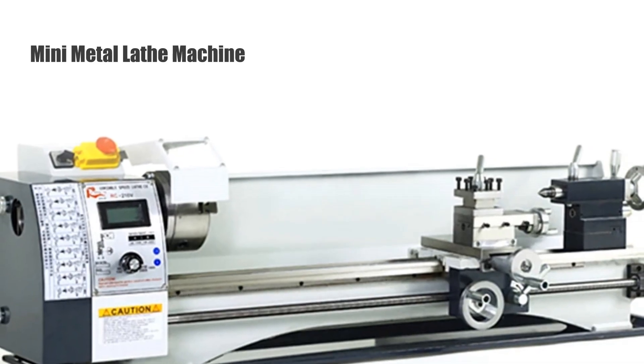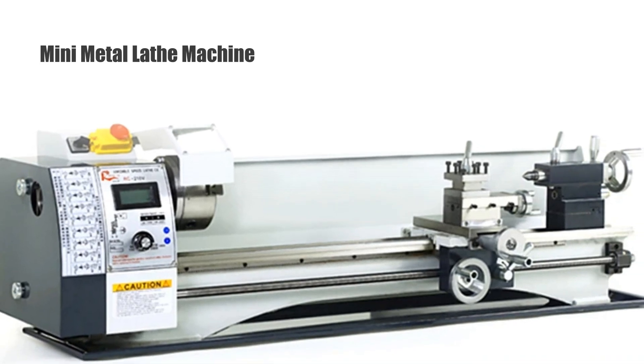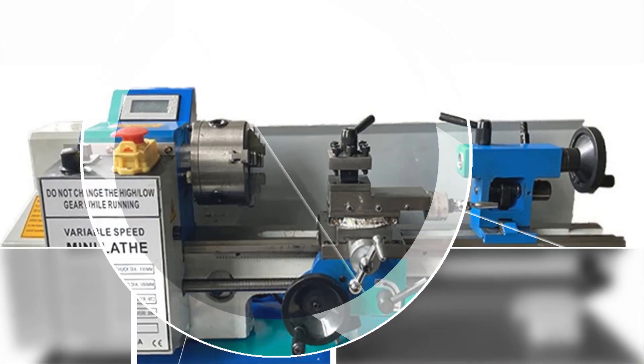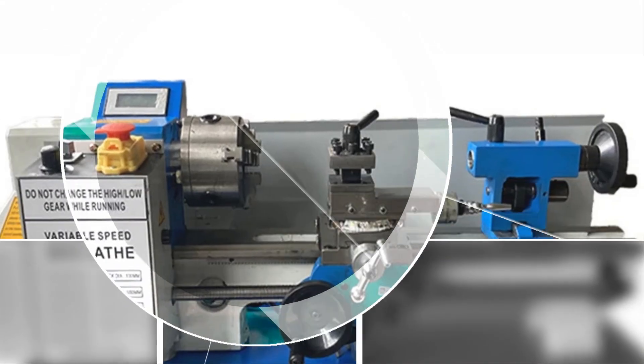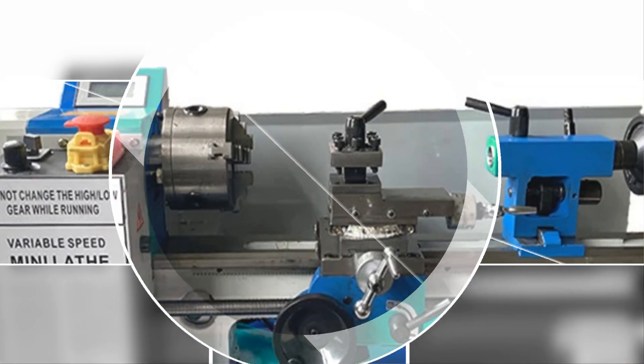Number 1, Mini Metal Lathe Machine. The top contender on our list, this mini-metal lathe machine boasts impressive specs and features. Powered by an 1100W motor, it offers variable speeds ranging from 300 to 8000 revolutions per minute.